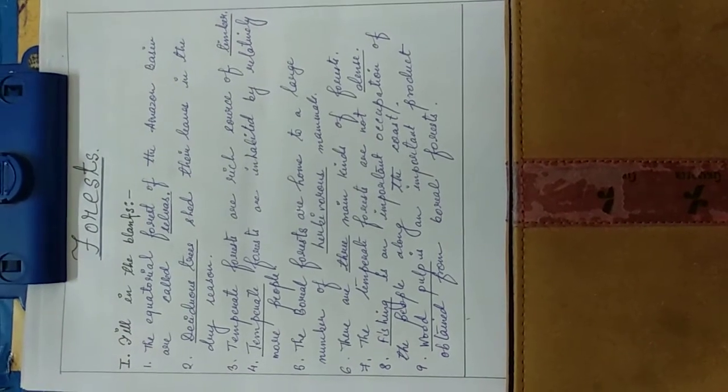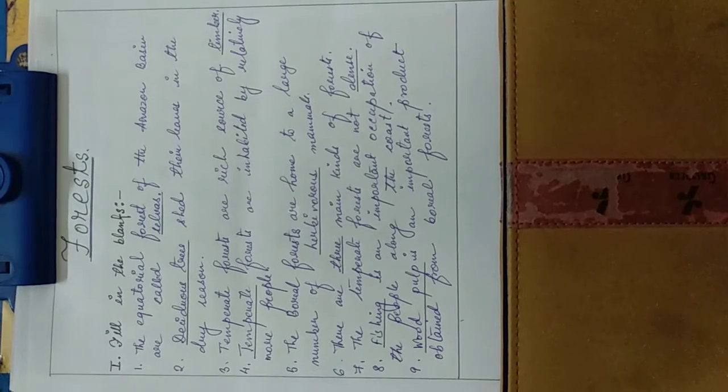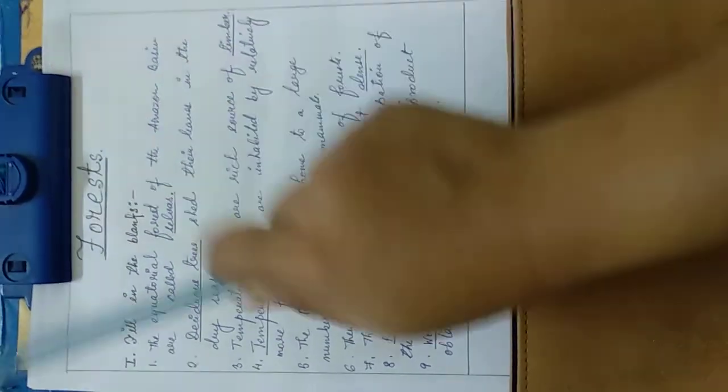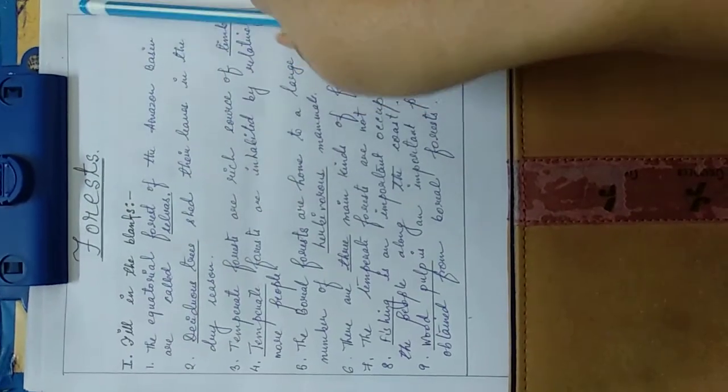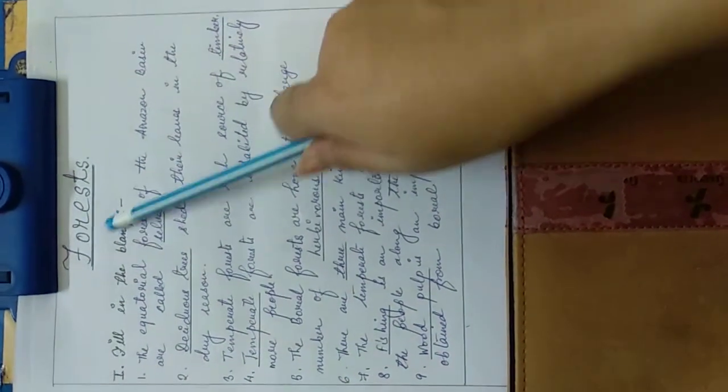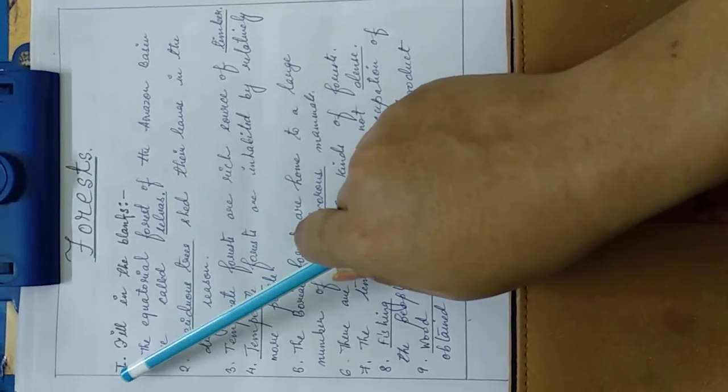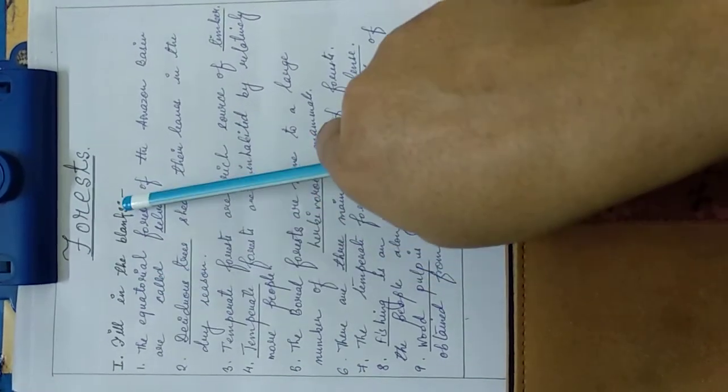So first, what you have to do in your CW exercise book is put classwork and date. Classwork and date is a must. Now you have to give the heading of the chapter, forest. Then come with the first point. Number one is filling the blanks, the first topic.